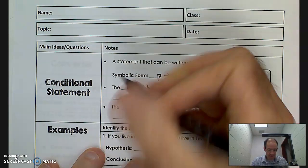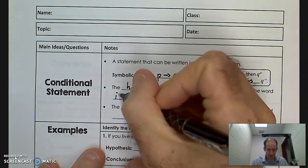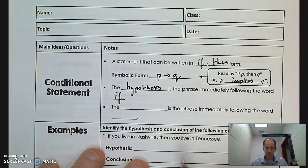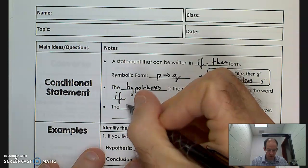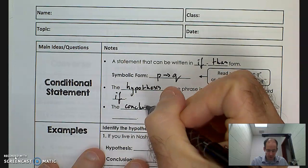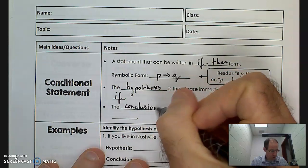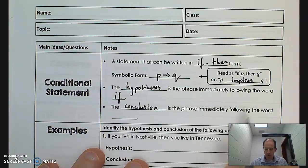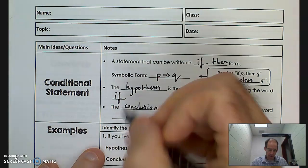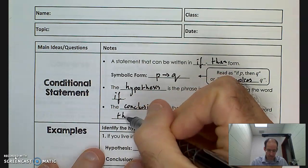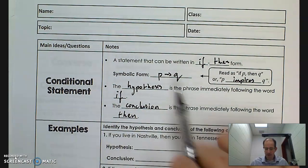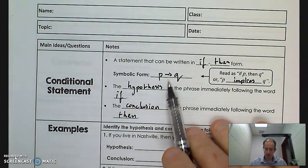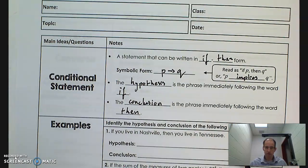The hypothesis is the phrase introduced by the word 'if' — so if something is true, that's the hypothesis. The conclusion is the phrase immediately following the word 'then.' So: if P, then Q; if my hypothesis, then my conclusion.